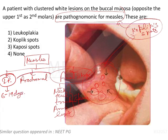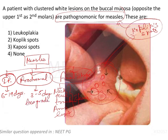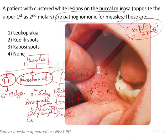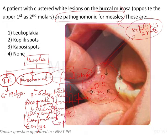The prodromal phase is generally 3 to 5 days, sometimes varying from 2 to 5 days. During this phase there will be low-grade to moderate fever, dry cough, conjunctivitis, and coryza. These prodromal symptoms generally precede the pathognomonic sign, which is Koplik's spots.